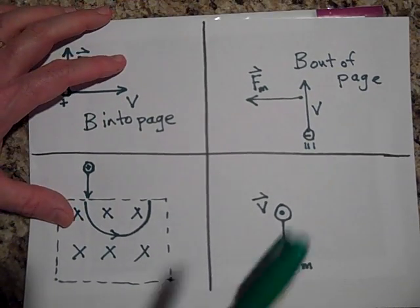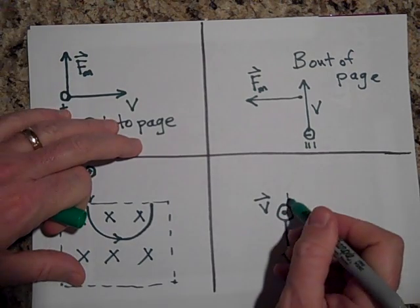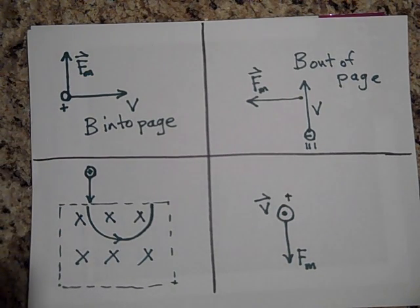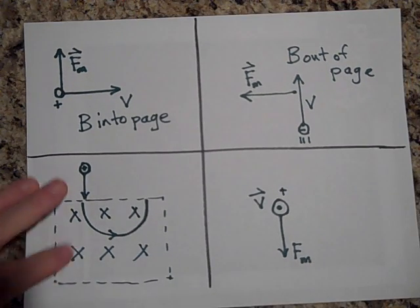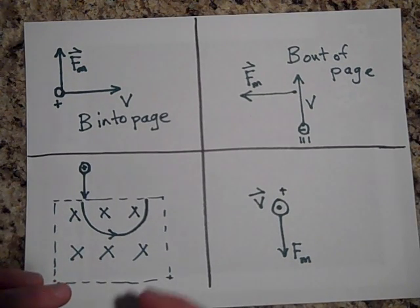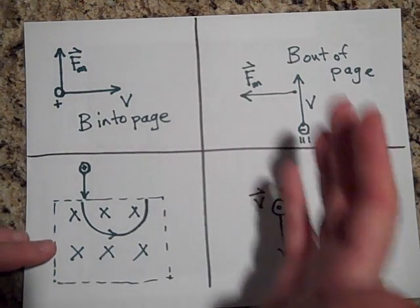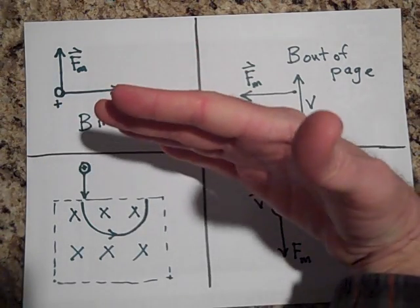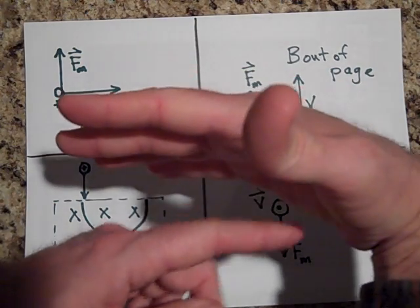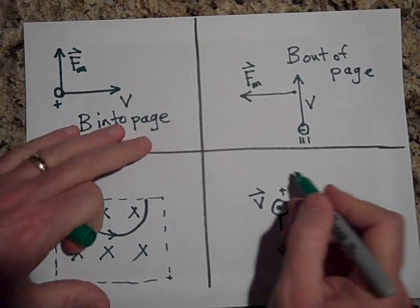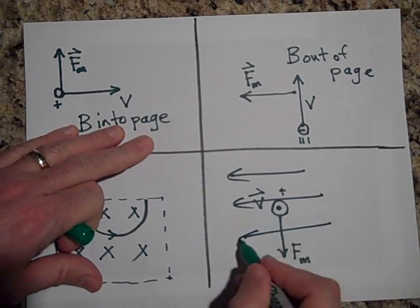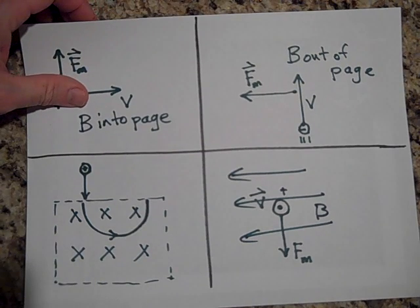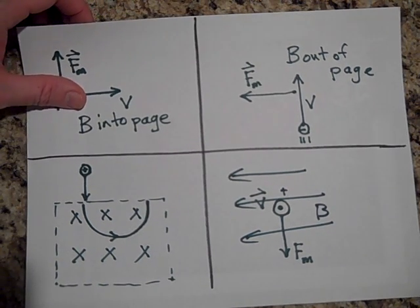What if v is shown as a dot, meaning it's coming out at us? Say it's a positive charge coming out at us and we want the magnetic force to be down. Using the right hand: thumb pointing toward you, and the palm should push down. For that to work, the field has to go this way — to the right. That's the direction of b.